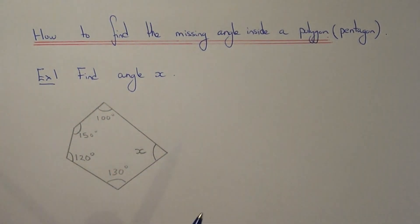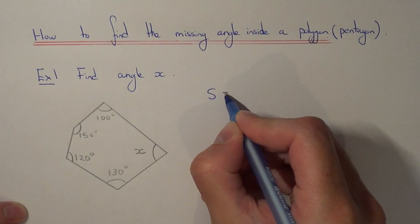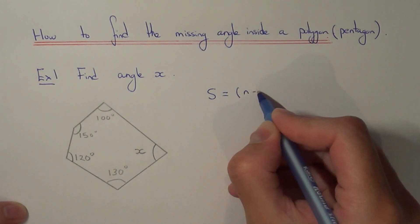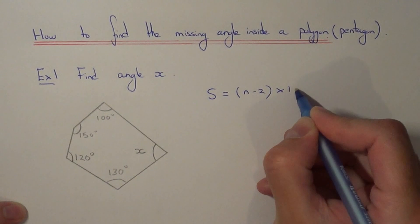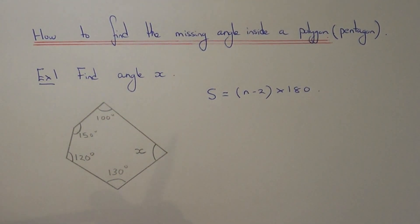So to find the sum of interior angles of any polygon, you can use the formula S equals N minus 2 times 180, where N is the amount of sides which the polygon has.